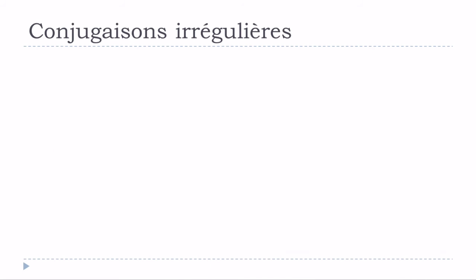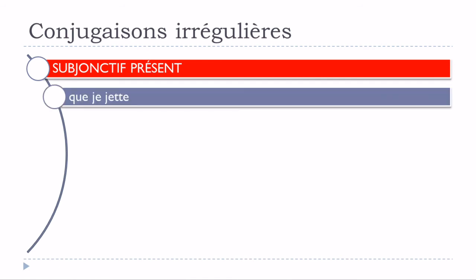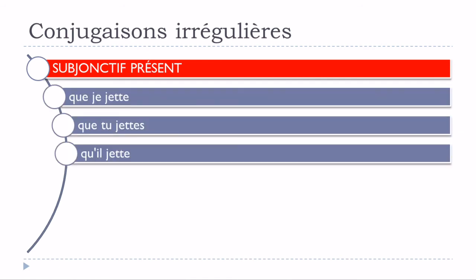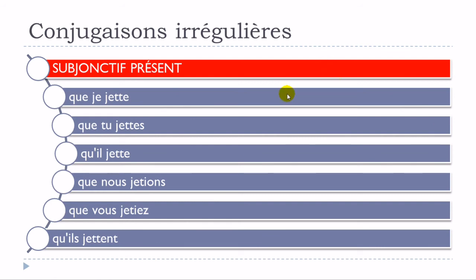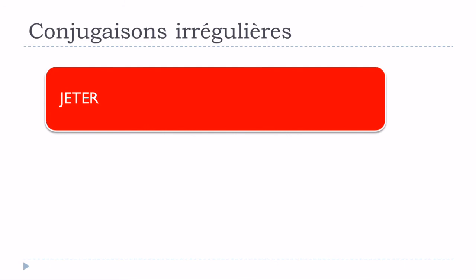Let's see now how the subjonctif présent will be affected: que je jette, que tu jettes, qu'il jette, que nous jetions, que vous jetiez, and then qu'ils jettent. What we can see here is that je, tu, il, and ils will be affected — you have to double this letter T. But nous and vous — don't touch them; just follow the rule of construction of the subjonctif présent for verbs from the first group.